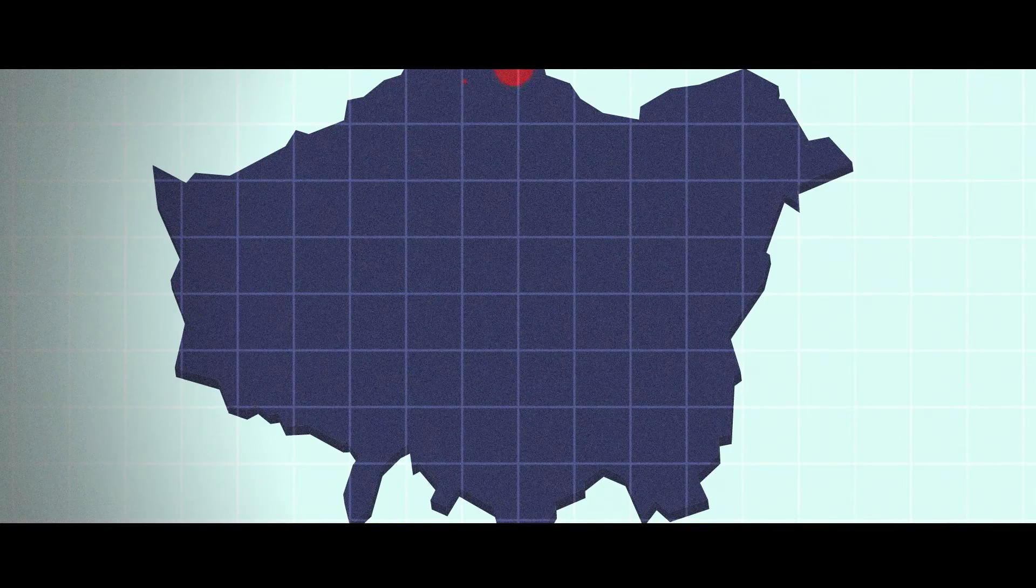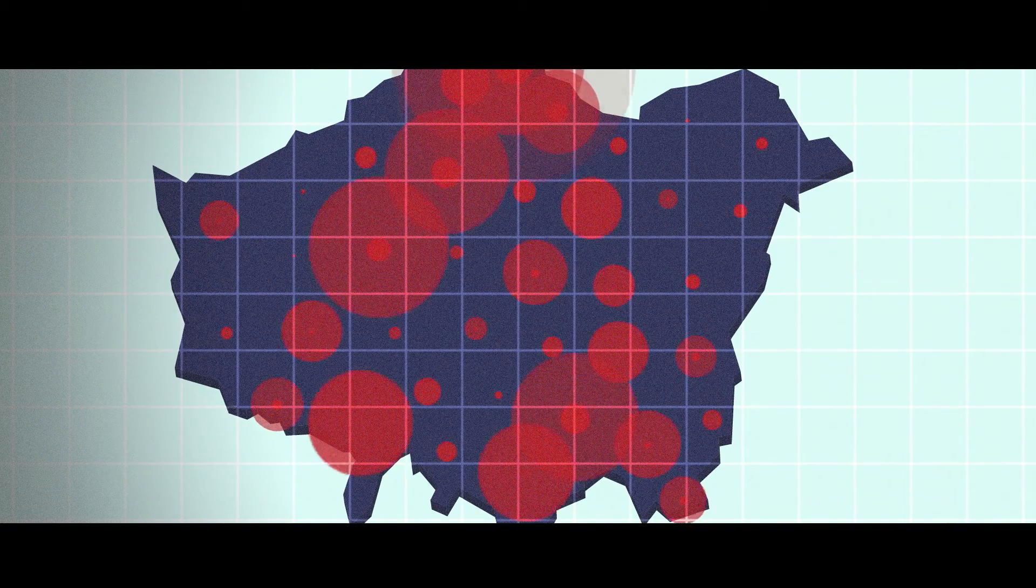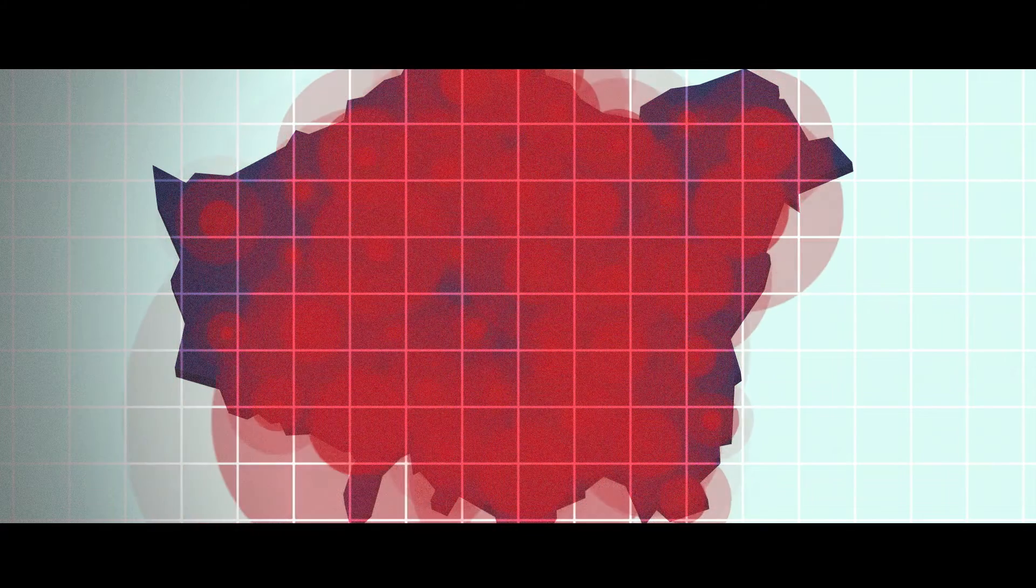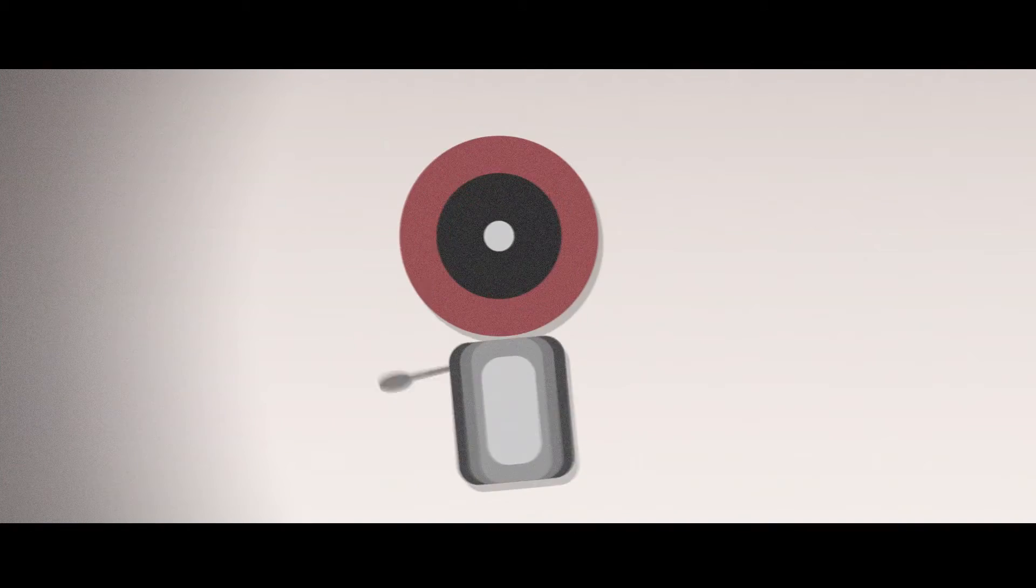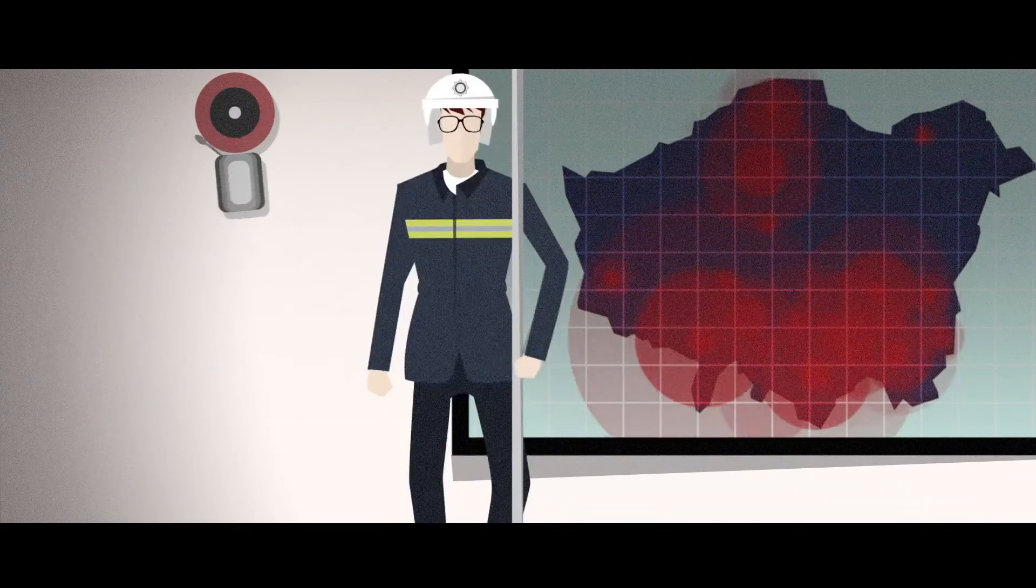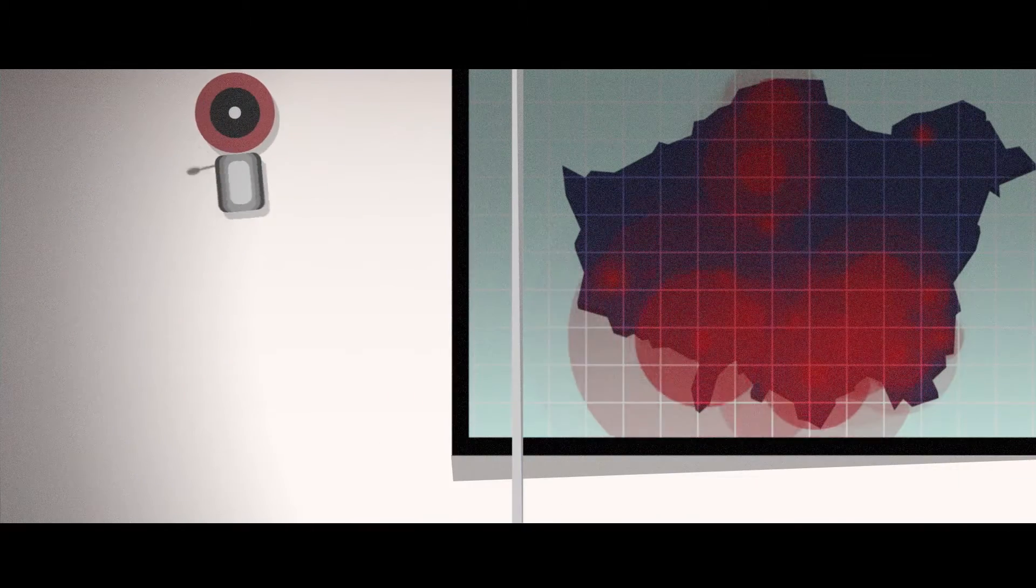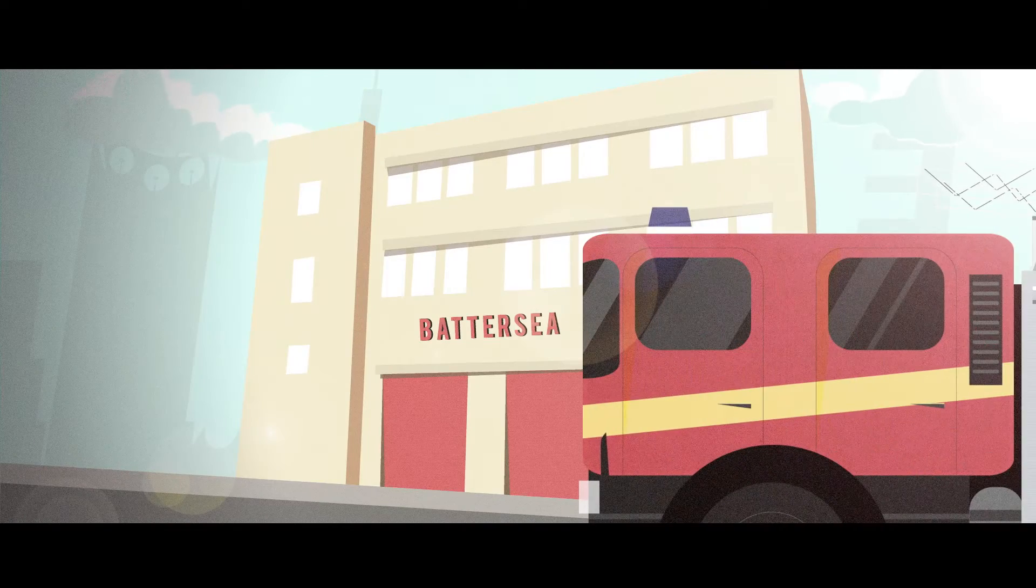Combined heat and power can be found in 40 London Fire Brigade stations. At Battersea Fire Station, it reduces 13 tonnes of carbon and saves the fire service £2,500 in energy costs a year.